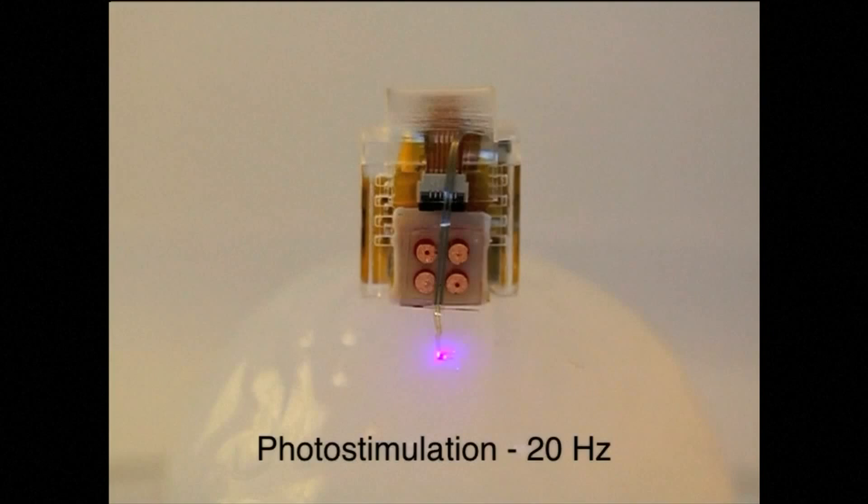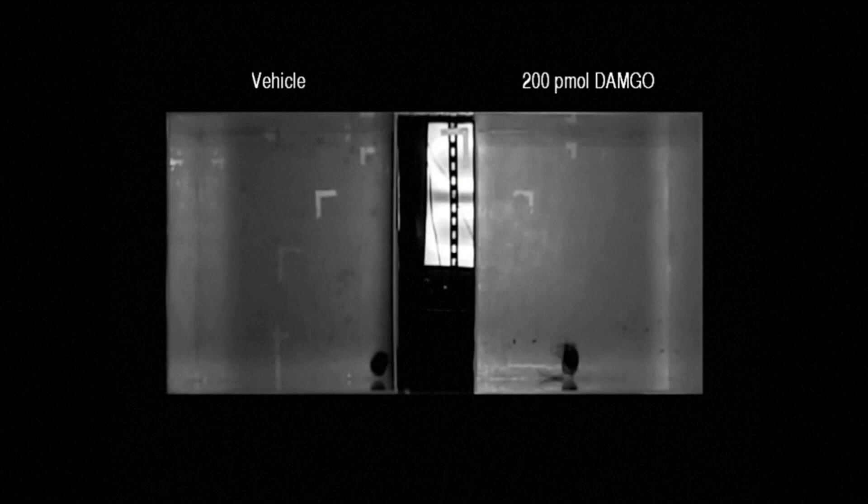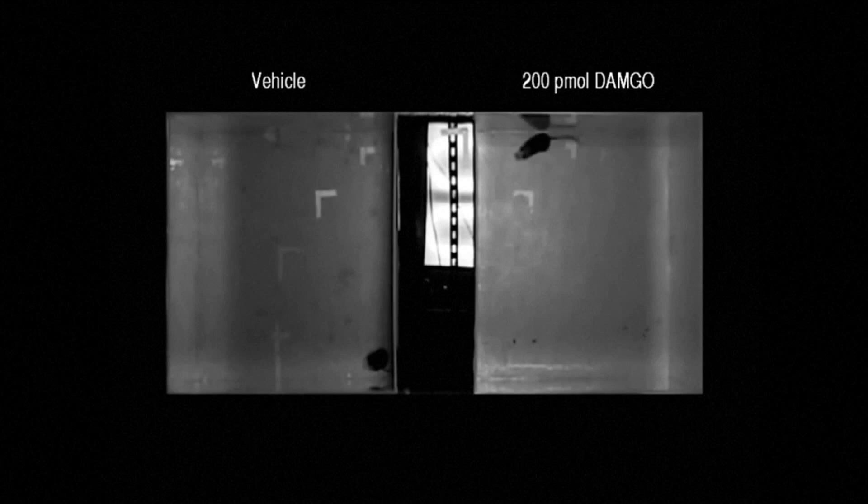Here, the mouse on the right was made to walk in circles after a drug was injected into specific brain cells. Other tests used pulses from the tiny LED to stimulate the neurons of mice engineered to respond to light.